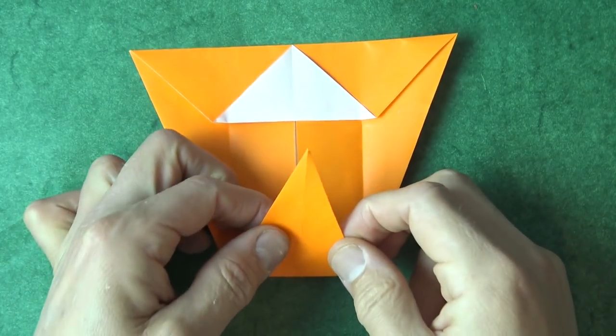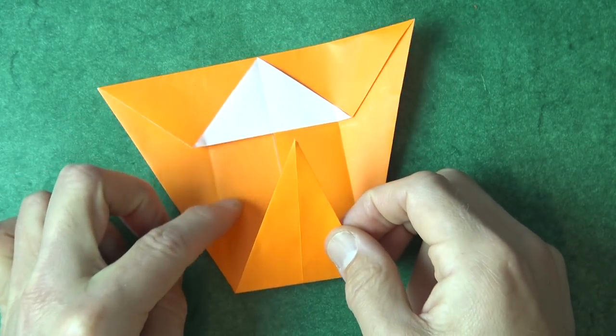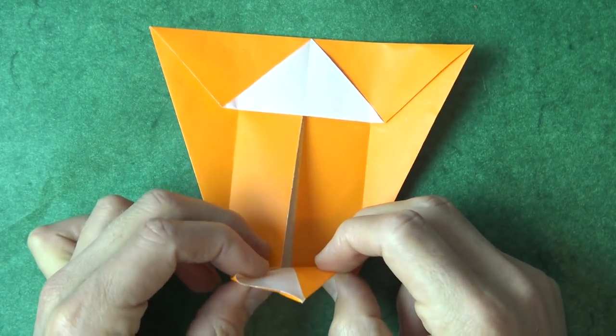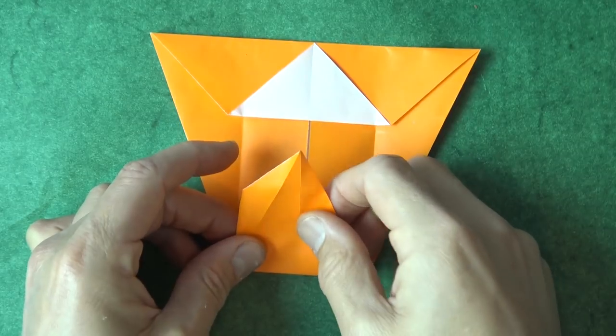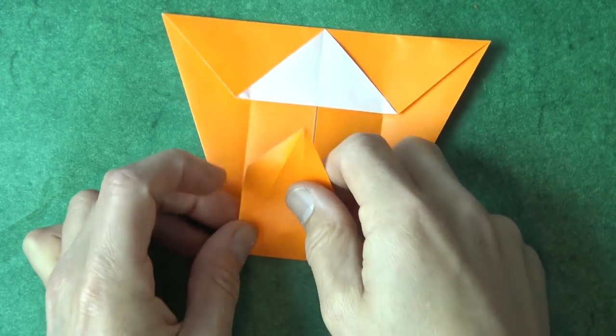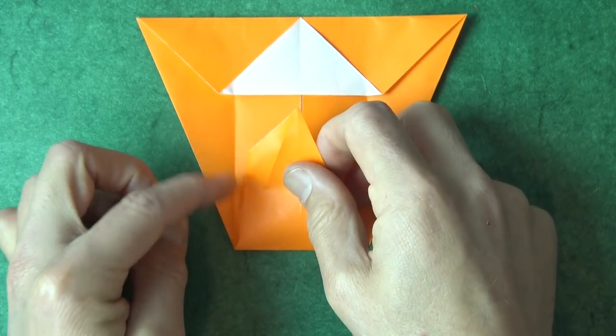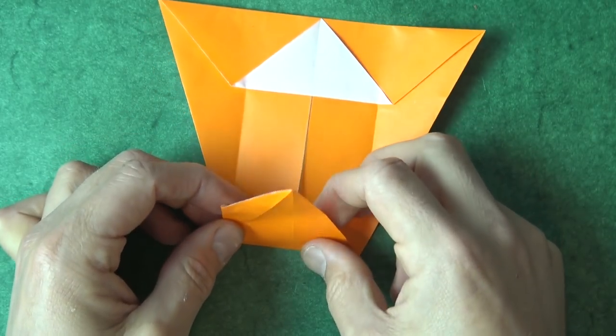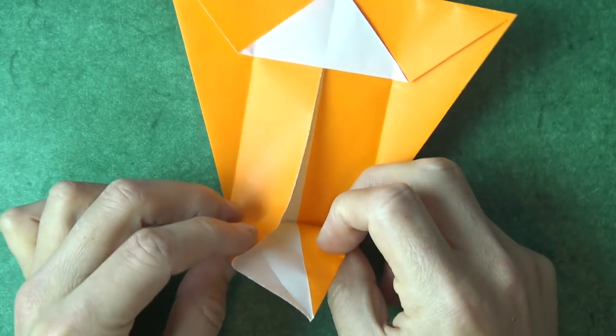All right, now we want to extend this edge so that it aligns with this crease. So reach underneath, and just pull this layer out, and pull it out so that when you flatten it, this edge aligns with the crease. I need to pull it out a little bit more. I'm going to show you what's happening underneath.